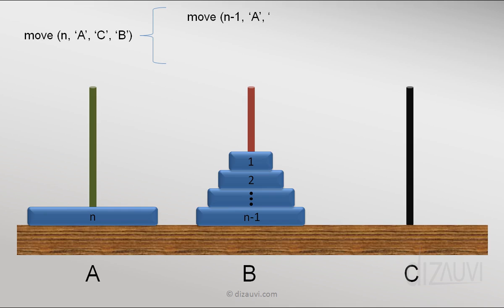Which means that we can call the move method for n-1 disks from A to B using C, isn't it? Notice that the order of arguments for from tower, to tower and using tower has changed.